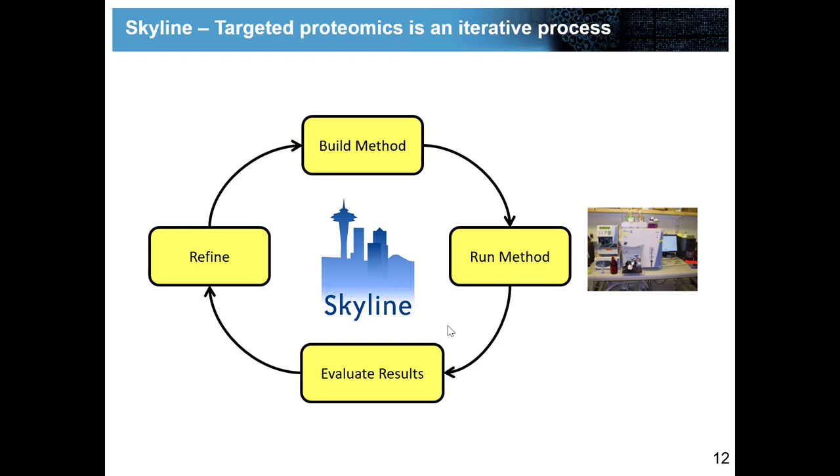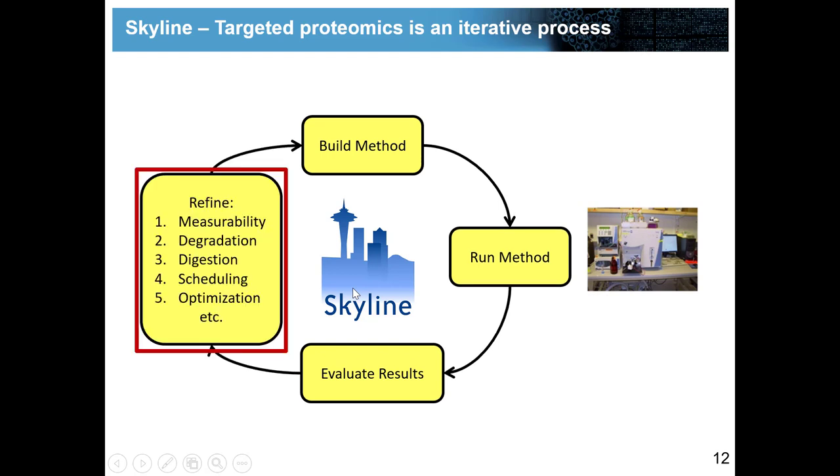It will very rarely happen that you just come up with a list of transitions or peptide precursors and apply this to hundreds of samples. It's much more often the case that you need to go through these refinement cycles, which means you start with some type of prior knowledge to build a method, you run the method, then you evaluate the results, and then you refine.